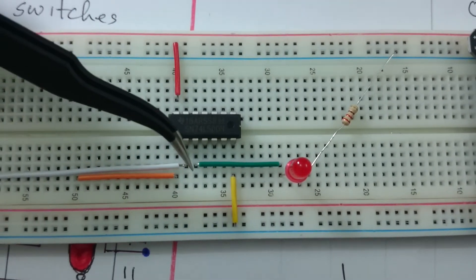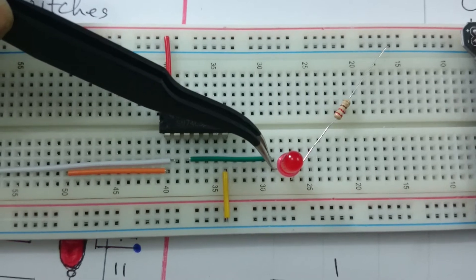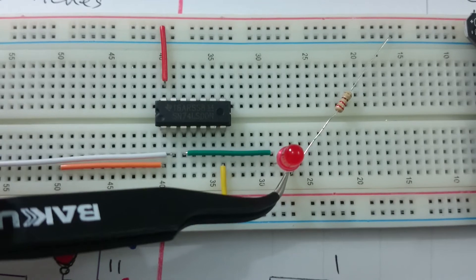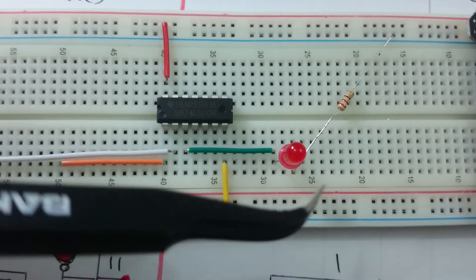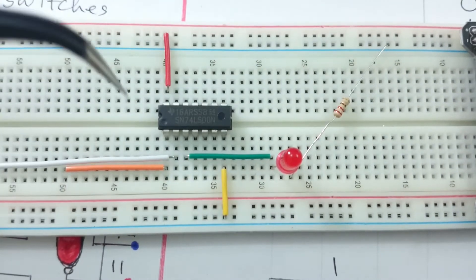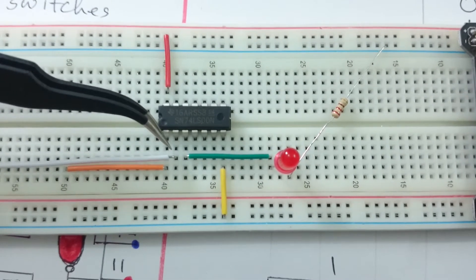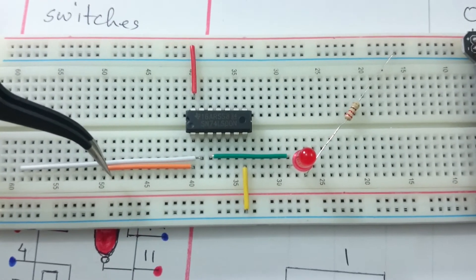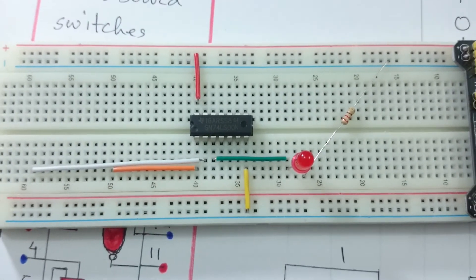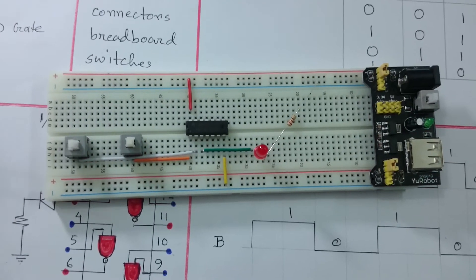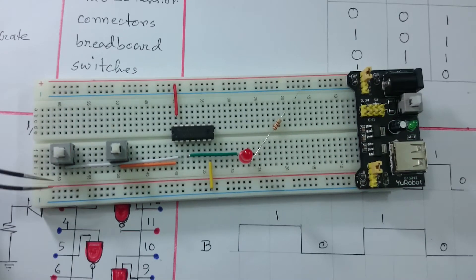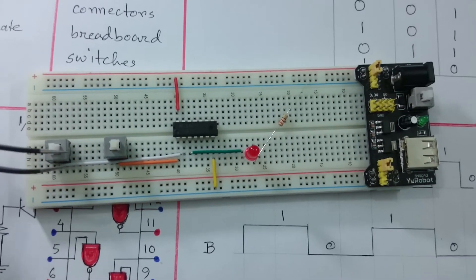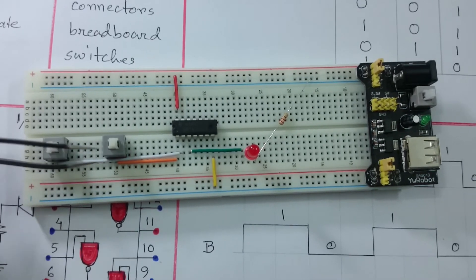I connected pin 3 to the anode of an LED, and the cathode goes through a resistor to ground. Pin 2 connects through this white connector and pin 1 through this orange connector. I placed two switches here, each with positive and negative connections.